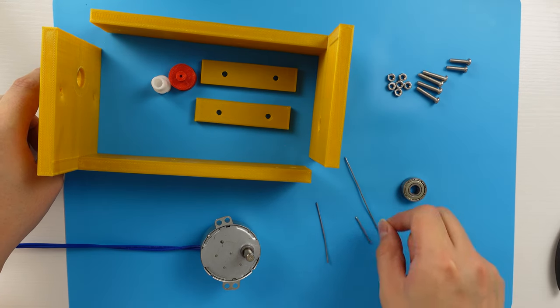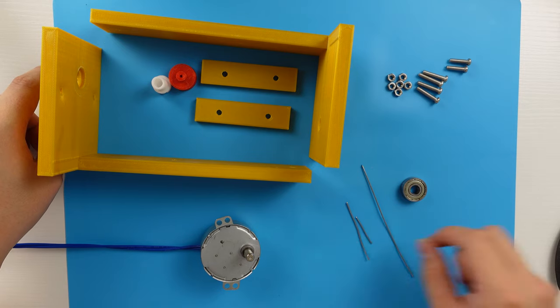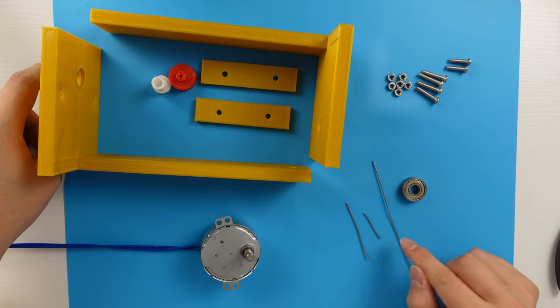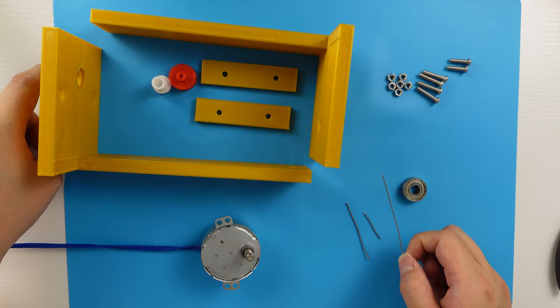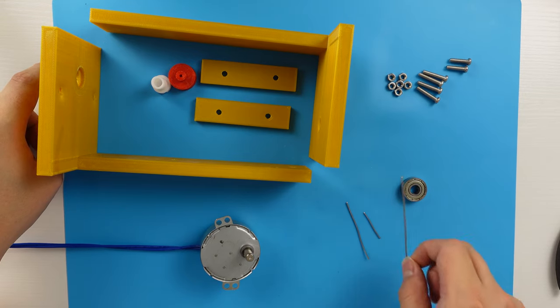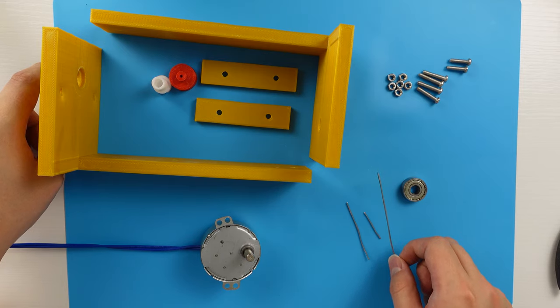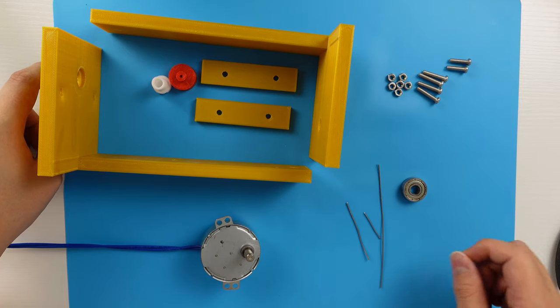And then you also need a 3/18 gauge wire. In this case you don't want to use a very hard wire. You want to use some soft wire. This is not a stainless steel wire. This is a normal steel wire. So this wire is not that hard, it's kind of soft.